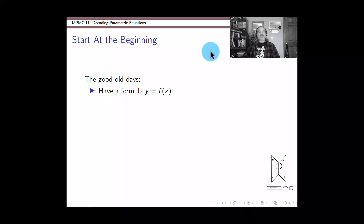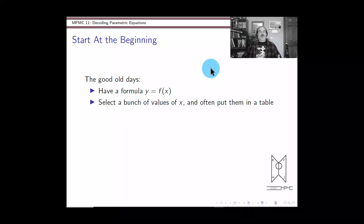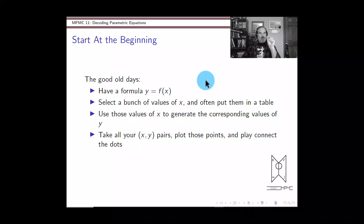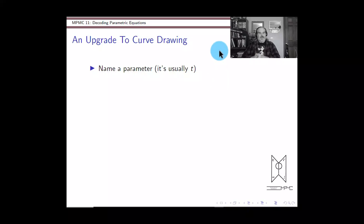Way back in the beginning — sixth grade or so — the very first time you made graphs of functions like y equals x squared or y equals one over x, the way you would draw them was to make a table. You'd pick a bunch of values for x, like negative three, negative two, negative one, zero, one, two, three, and use your formula to calculate the corresponding y values. Then you'd take those x-y pairs, treat them as points in the coordinate plane, plot those dots, play connect the dots, and get the curve.